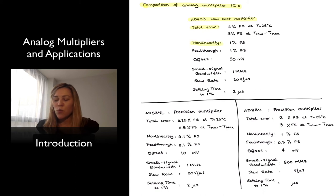The non-linearity error is 1% of full-scale range. The feed-through, or worst-case feed-through, is 1% of full-scale range as well. The offset is 50 millivolts, the output offset when both input signals are equal to 0. In terms of dynamic performance, it has a small signal bandwidth of 1 MHz, a slew rate of 20 volts per microsecond, and a settling time to 1% of its final value of 2 microseconds.